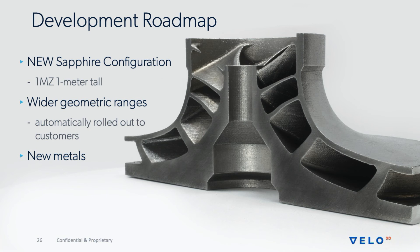Looking ahead on our development roadmap, we're pleased to release our meter-tall Sapphire configuration — the same Sapphire layout but with more than twice the build opportunity in the Z direction. We're forever expanding our geometric ranges with new process sets and parameters to enable more printing of more complex features, and these new process parameters are included for all our customers in software updates. We're also developing new metals and new materials, and we offer free process development of any material that a customer would like with the purchase of a Sapphire system.